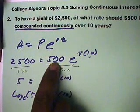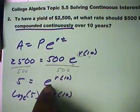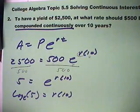So now we're two down and one to go. We got rid of the 500 by dividing by 500. Then we got rid of the e by converting this into a logarithm. And now we're going to get rid of the 10 by dividing everything by 10.